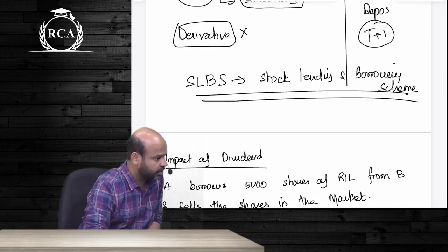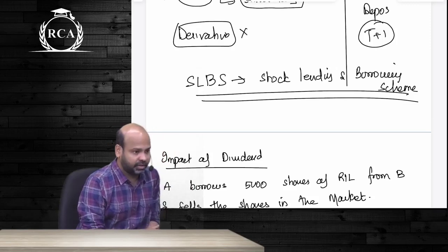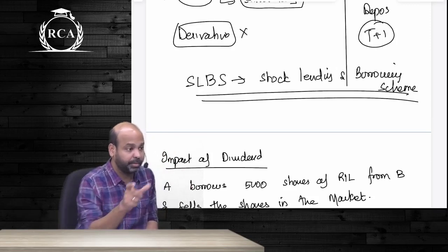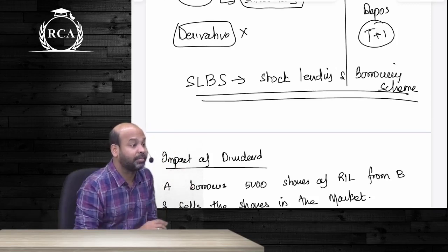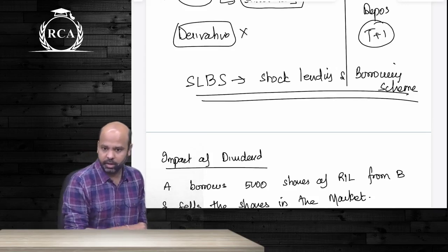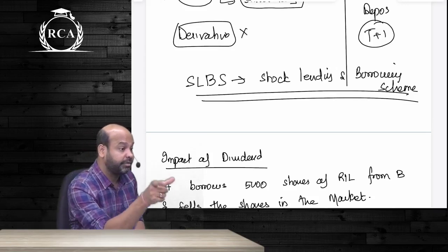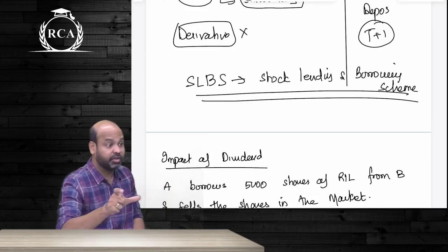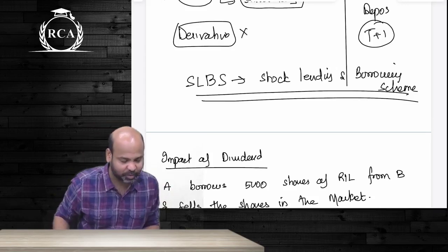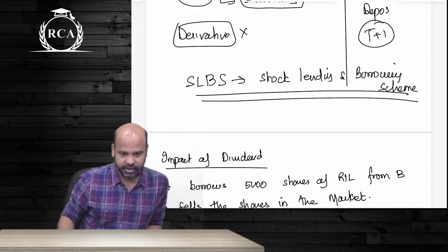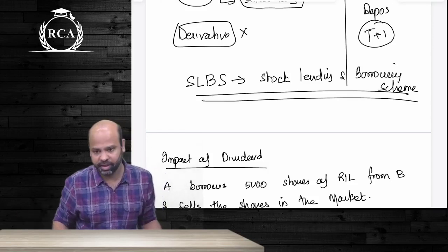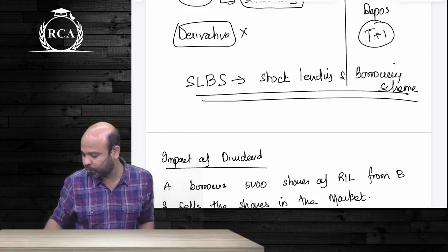One more concept: the capitalization method. Under this method, the value of an equity share equals profits divided by the normal rate of return. In the question, profit was specifically defined — 50% of distributed profits and 5% of undistributed profits. If that definition was not given, you would have directly taken profits divided by the normal rate of return.